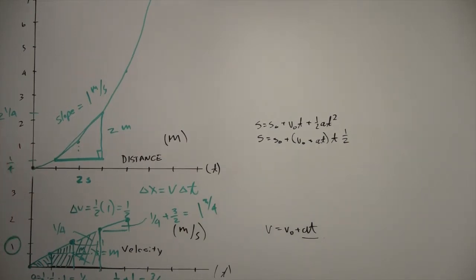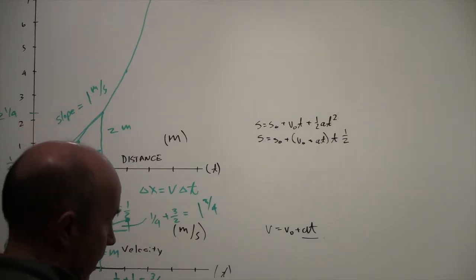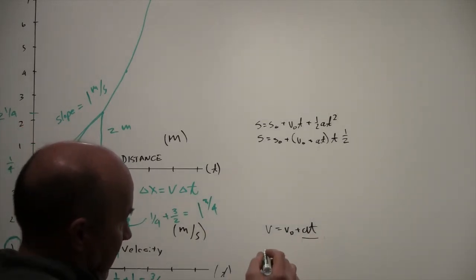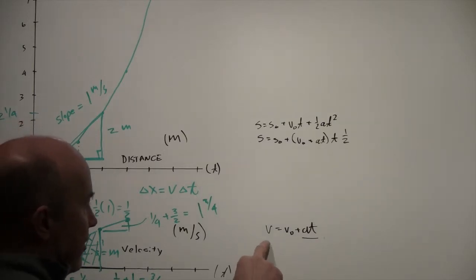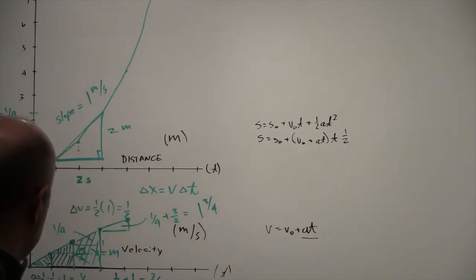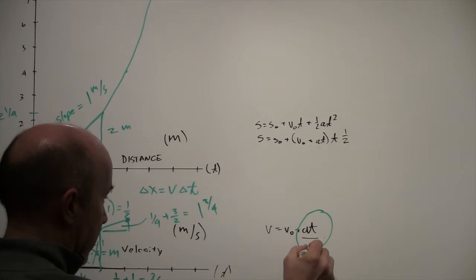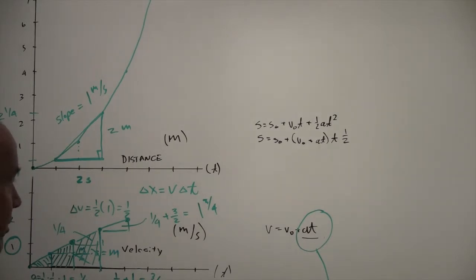With your physics book you'll have the equation v equals v-zero plus acceleration times time. All that means is your new velocity is where you started, plus acceleration times time. That AT term comes from the area under the acceleration curve. The original v-zero is just where you started, and you add the increments on.